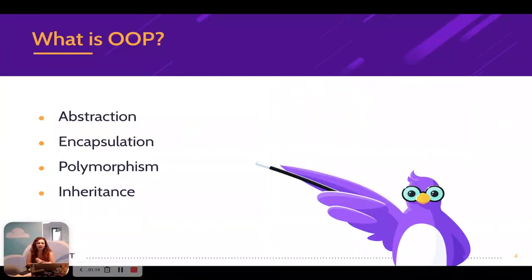Let's start by asking ourselves the question: what is OOP? These are the commonly regarded principles of OOP. The first is abstraction, which means that we don't need to know how something works in order to use it. Basically, it's representing complexity through simplicity.